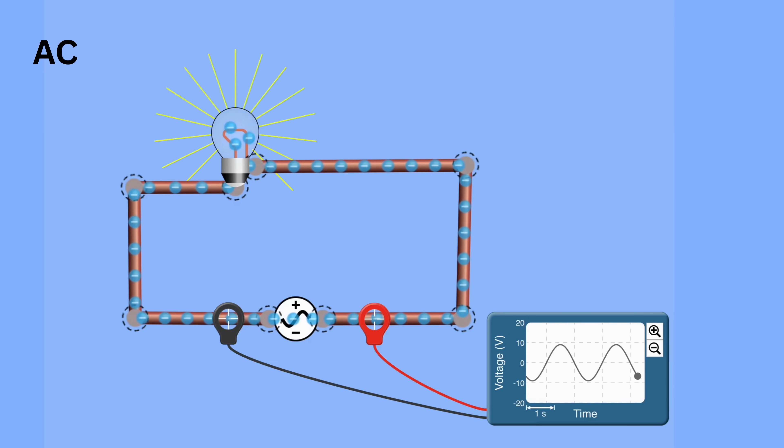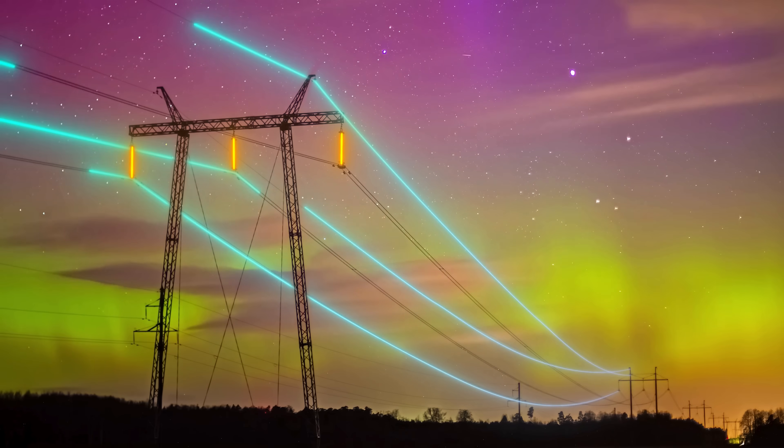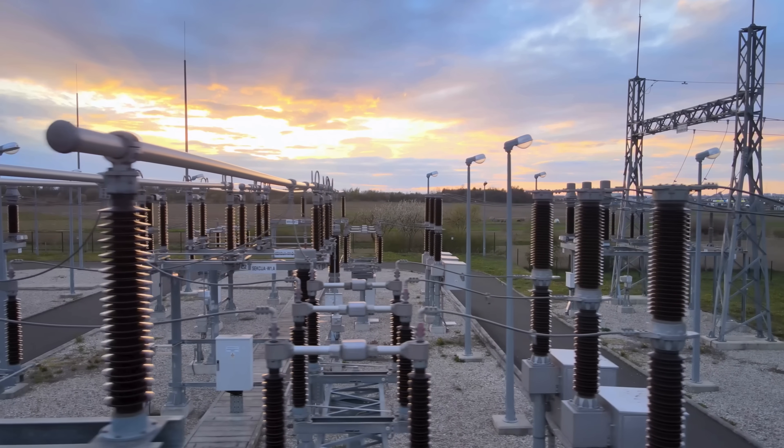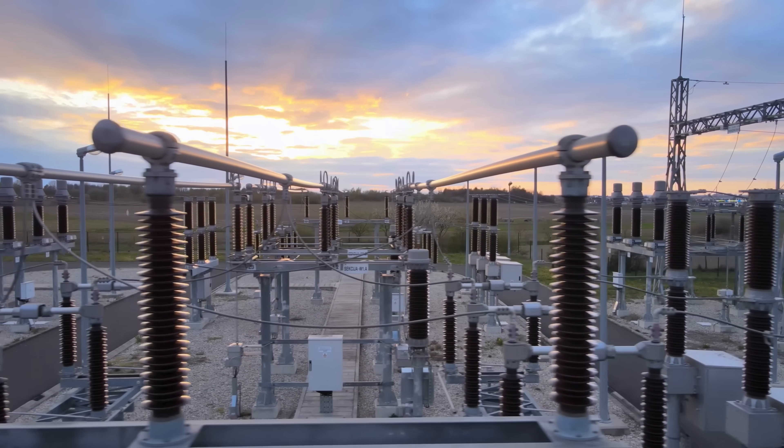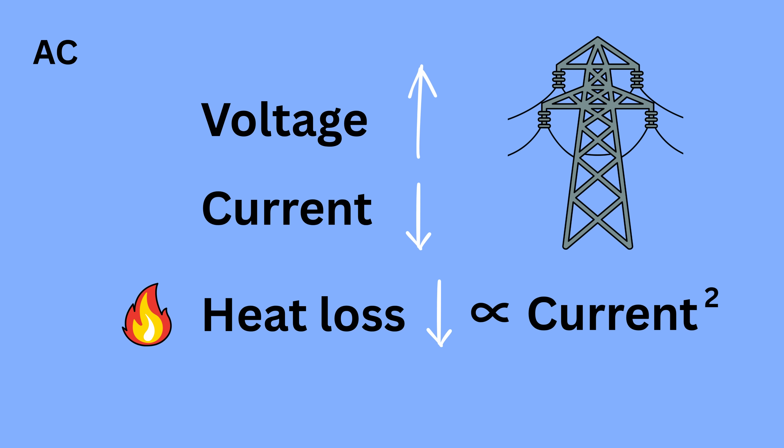This sinusoidal nature also ensures smooth power delivery without sudden jumps or sharp changes. Actually, AC is ideal for long-distance transmission because its voltage can be easily increased or decreased using transformers. High voltage means less current, which means lower heat loss. This makes AC more efficient over large distances.